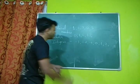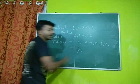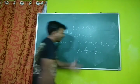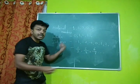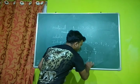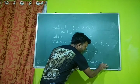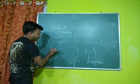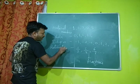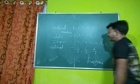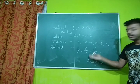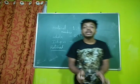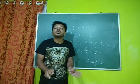Now I am going to write one different number. That is 1 upon 3, 5 upon 4, and 6 upon 7, etc. These are fractions. But in the group of numbers, we give the name rational numbers. Numbers in the form 1 upon 3, 5 upon 4, 6 upon 7 — these are examples. This group of numbers is called rational numbers.